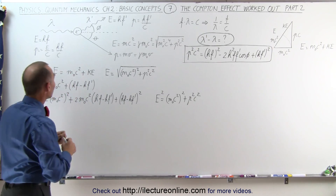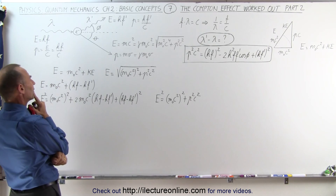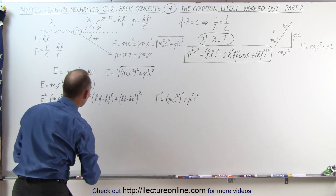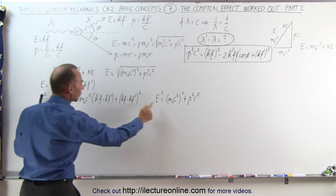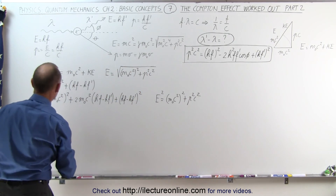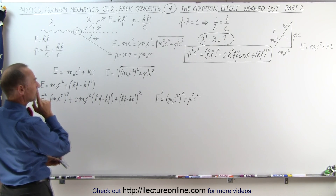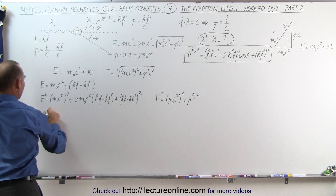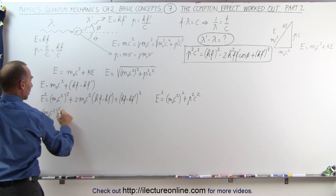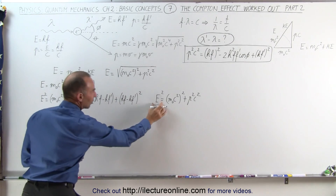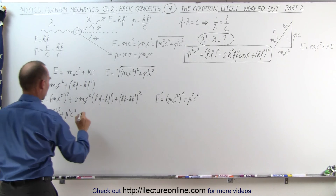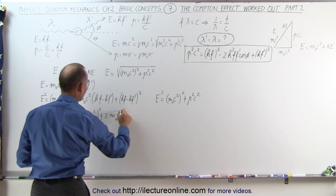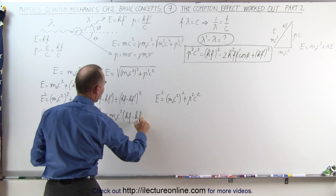We're now going to set these two equations equal to one another. We have M sub-naught C squared quantity squared plus P squared C squared — on the right side — equal to M sub-naught C squared quantity squared, plus two times M sub-naught C squared times HF minus HF prime. Notice we have M sub-naught C squared squared on both sides, so that cancels out.